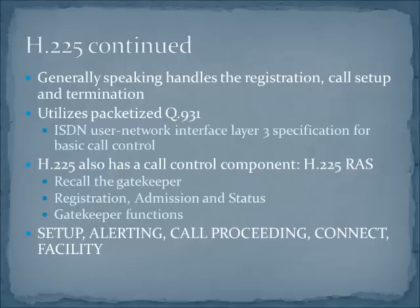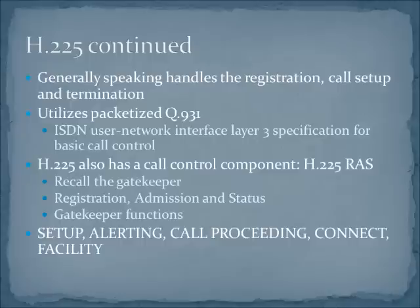H.225 utilizes Q.931 signaling messages, so the same functions present on an ISDN network are present in packetized form on an H.323 IP-based telephony or video call. The RAS portion — Registration, Administration, and Status — is a gatekeeper function. It's not always there; it's used when you want to implement things like admission control for your network. H.225 and H.245 both have a collection of defined messages, some mandatory and some optional, so you don't always see every message utilized in an H.323 conversation.